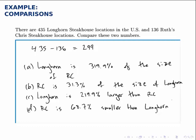So here we have a summary of our four results. And notice something interesting. If you look at A and C, Longhorn is 319% of the size of Ruth's Chris and 219% larger. The difference between those two is 100%. So by saying that Longhorn is 319% of the size, if you take out 100% for Ruth's Chris, what remains is the 219% larger that Longhorn is. Similarly, if you look at B and D, you notice that those two are related because they add up to 100%. So there's relationships between the first two answers and the second two answers.